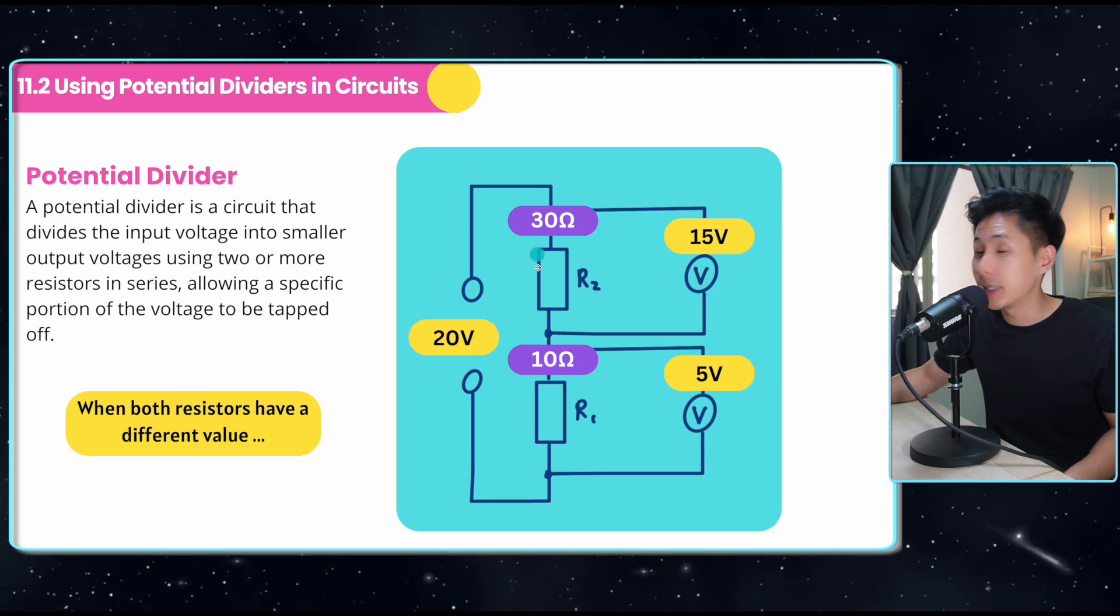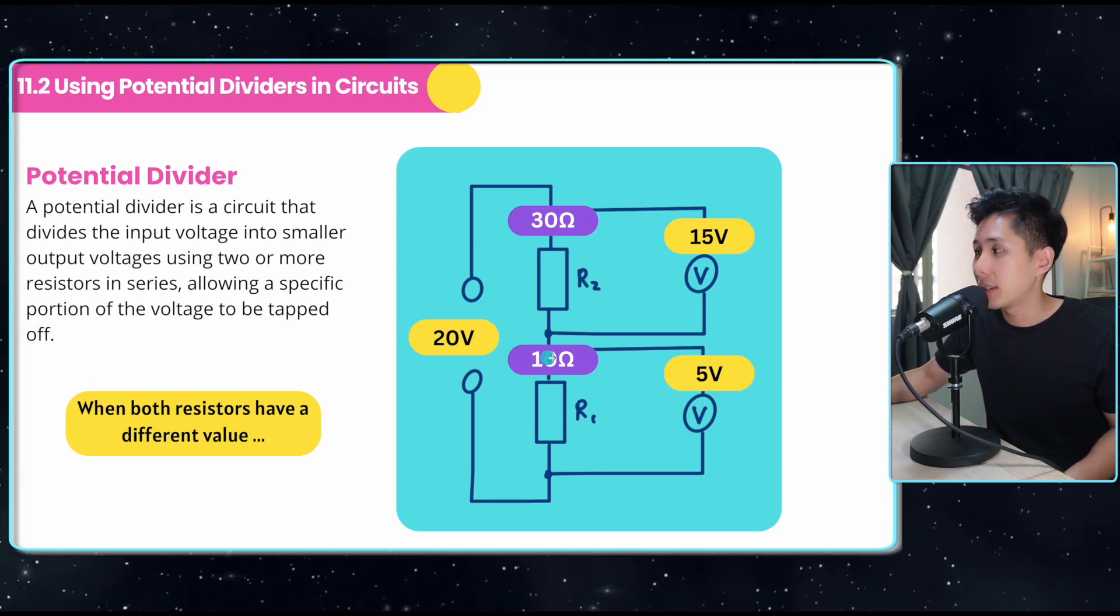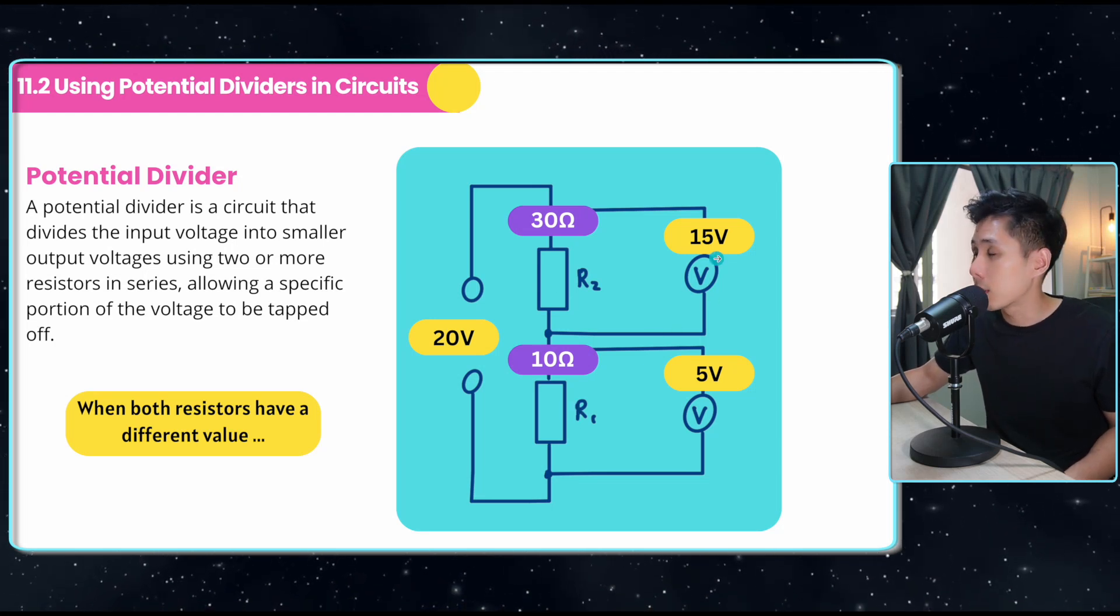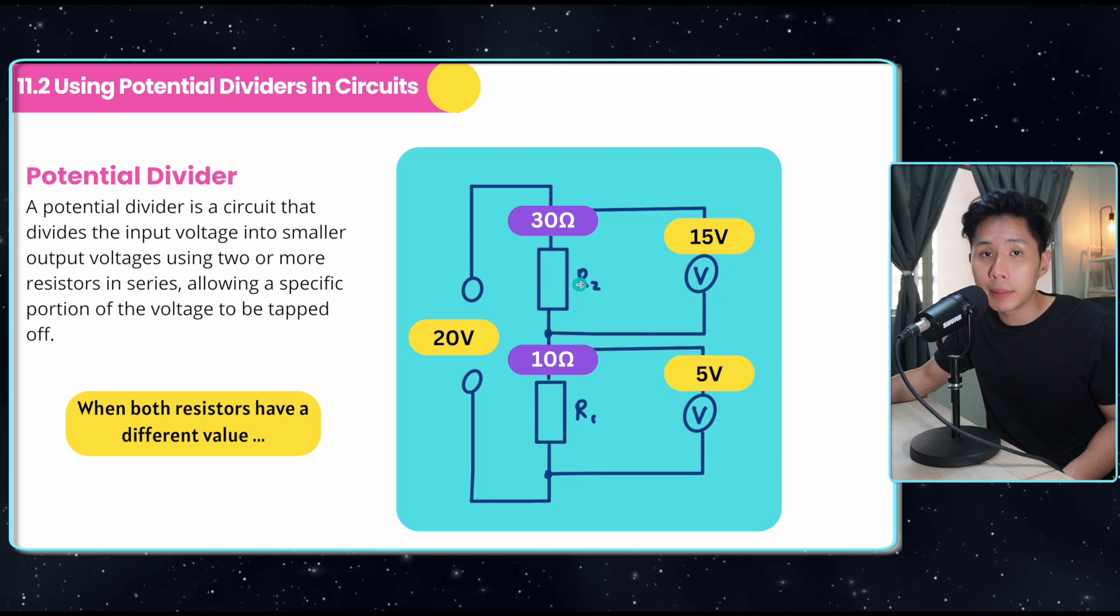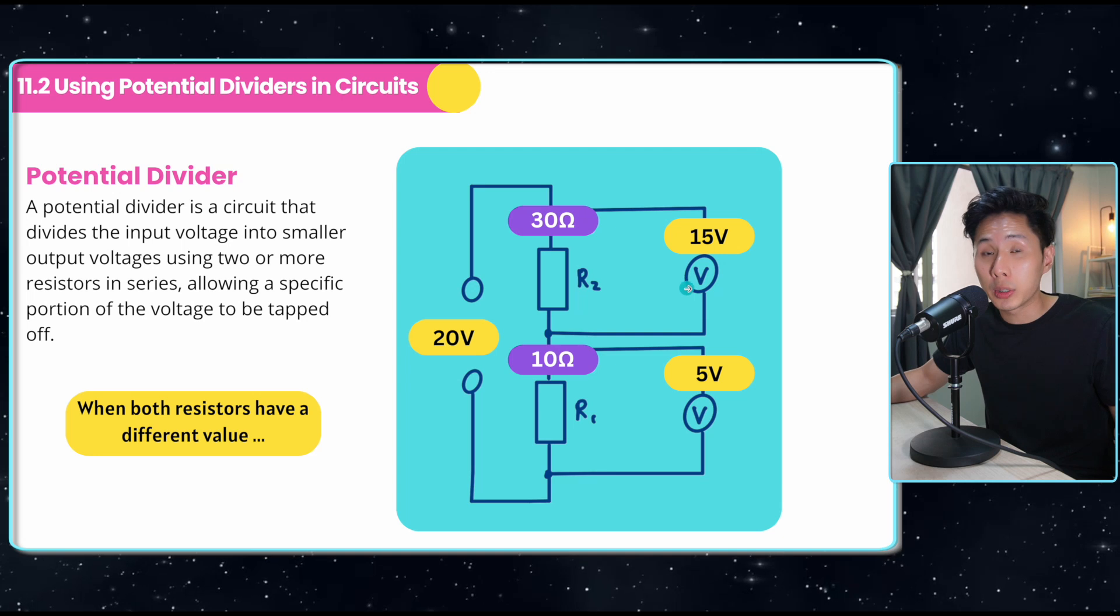Things get a bit different when the resistances are different. For R2, it has 30 ohms; R1 has 10 ohms, three times more than R1. As a result, the voltage across R2 is also three times more than R1. So essentially, it's ratio. The higher the resistance, the higher the voltage.